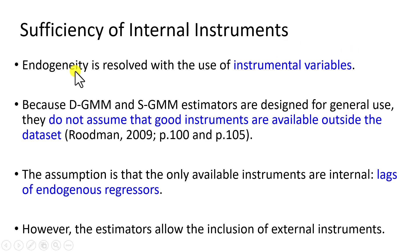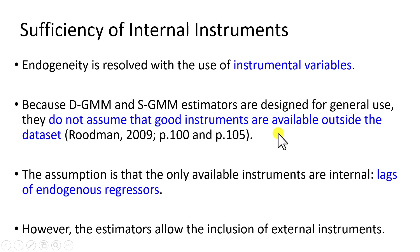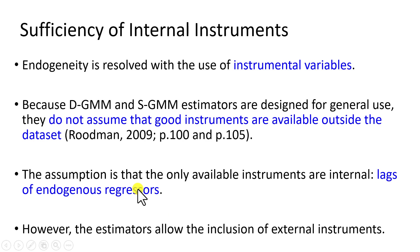Endogeneity in both estimators is resolved with the use of instrumental variables. But because these two estimators are designed for general use, they do not actually assume that good instruments are available outside of the data set. The assumption is that the only available instruments are going to be internal instruments, specifically lags of the endogenous regressors. The estimators do allow the inclusion of external instruments.